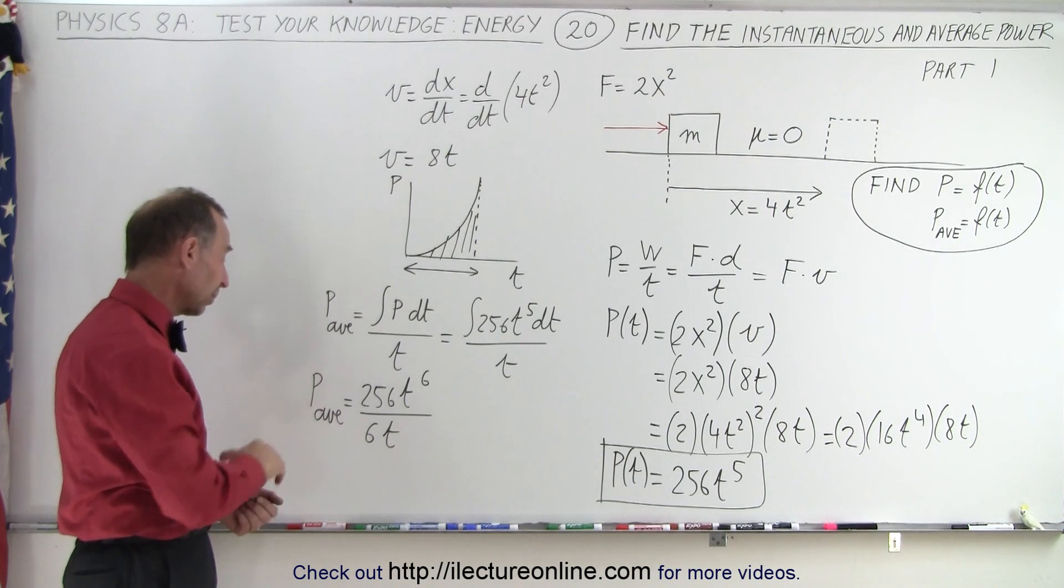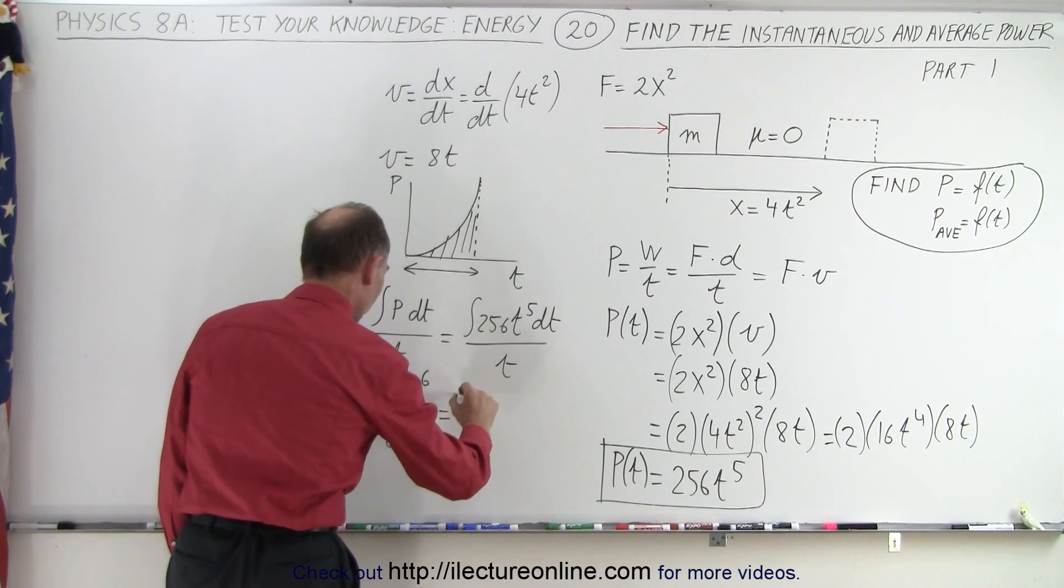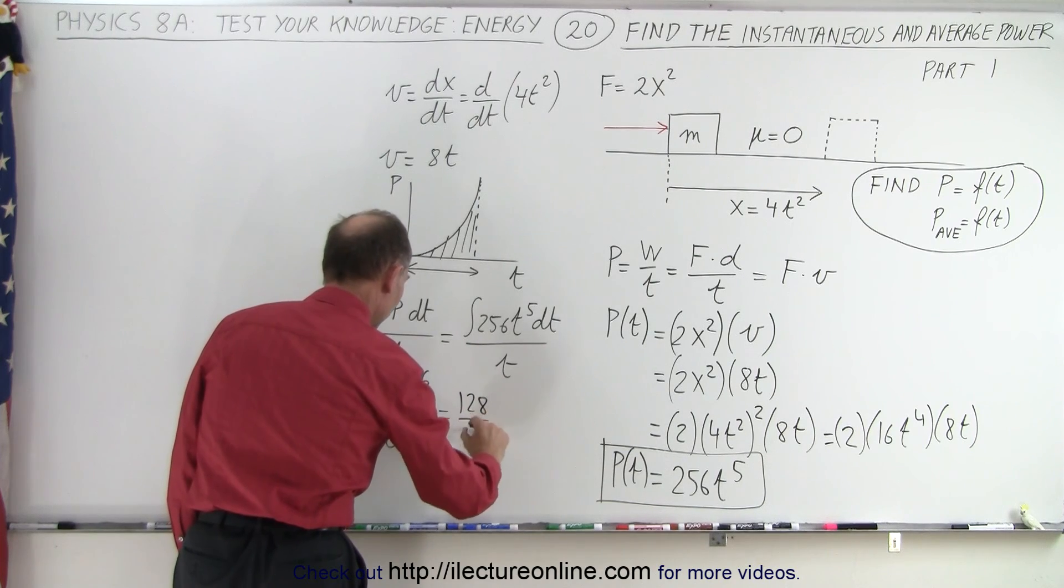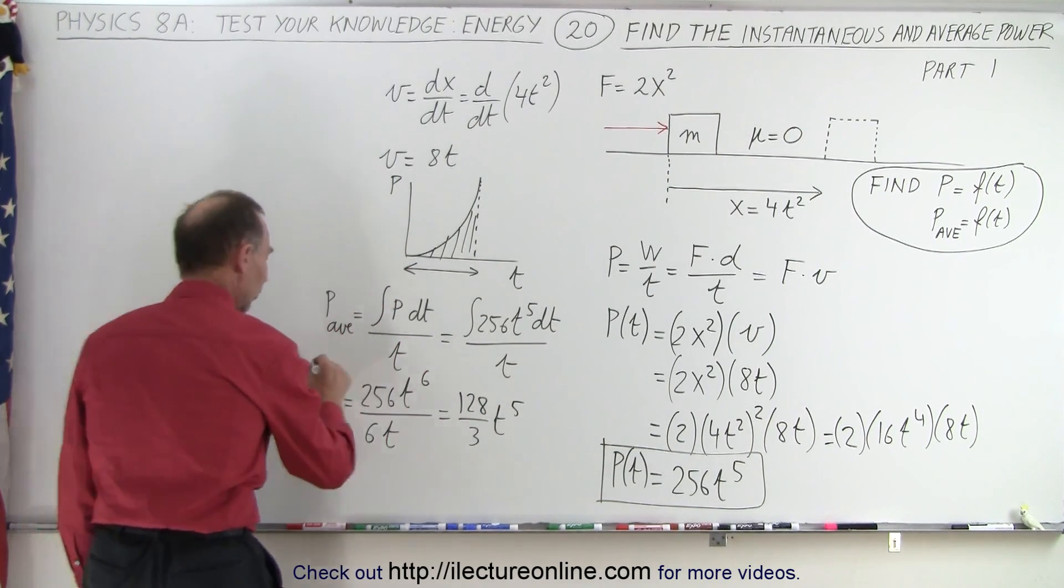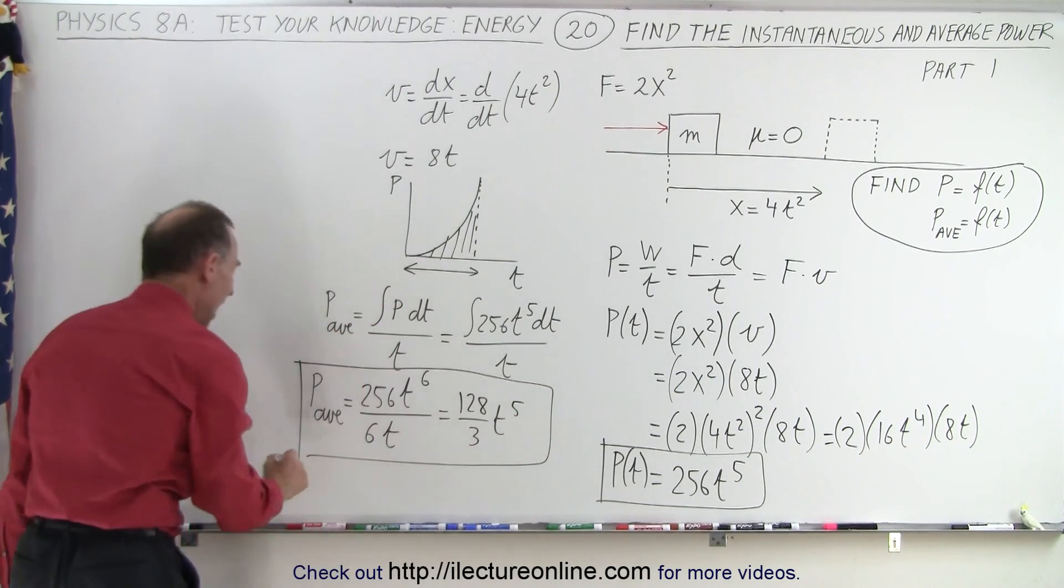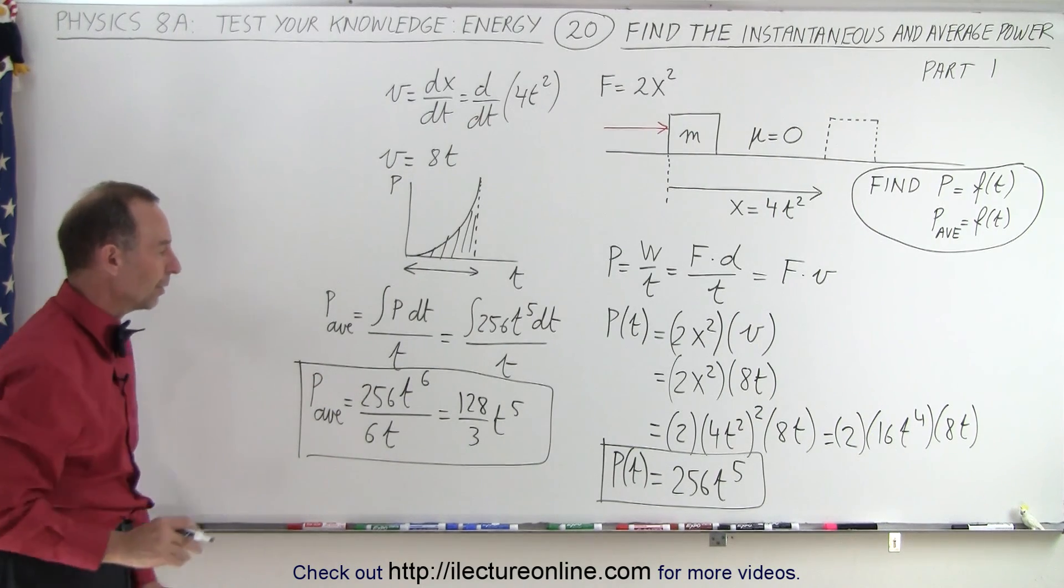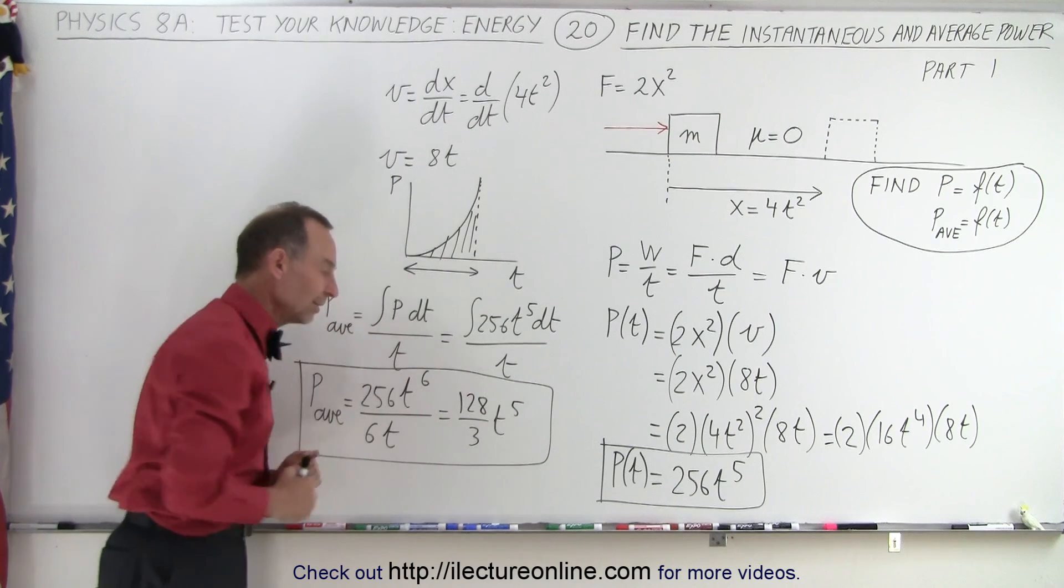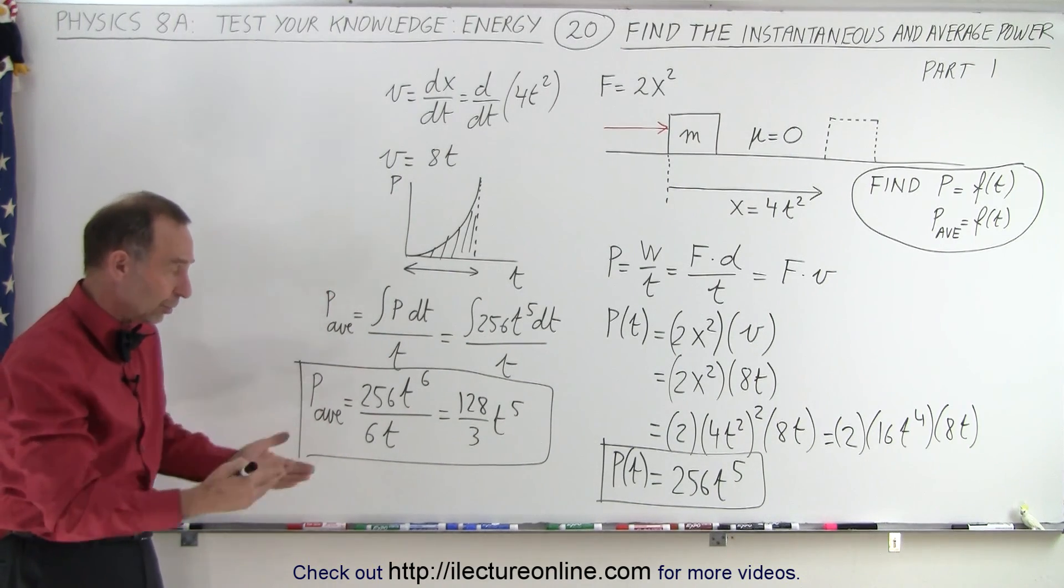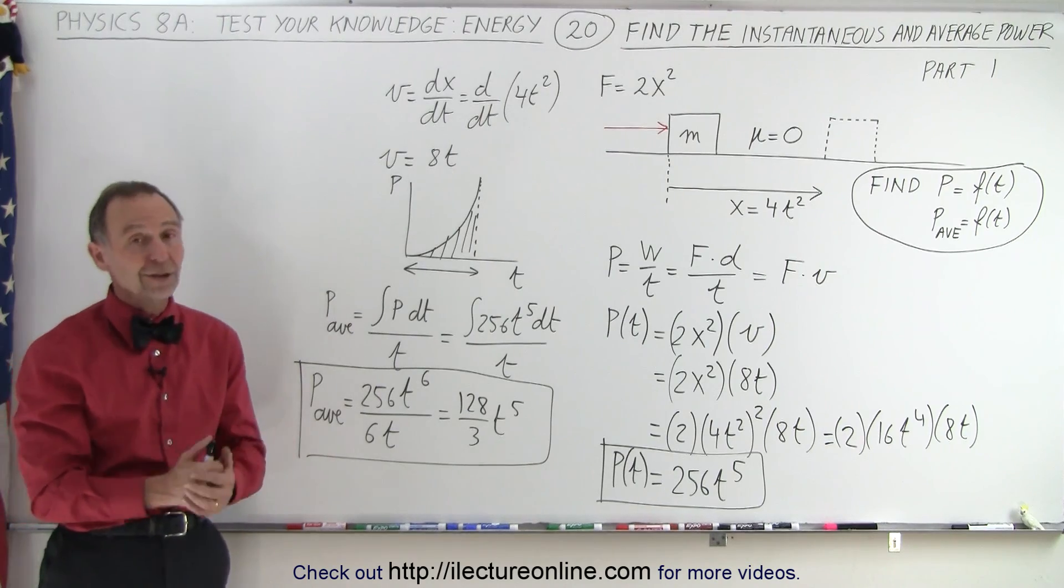That's not divisible by 6, but they're both divisible by 3. So this can be written as 128 divided by 3 times t to the fifth power. And there is an equation that gives us the average power as a function of time versus the instantaneous power as a function of time. And of course, this would be over a period of t seconds, and it doesn't matter how long the period is, that would be the correct equation. And that is how that's done.